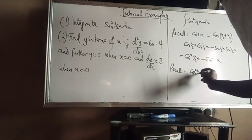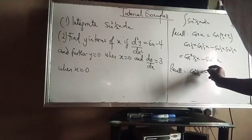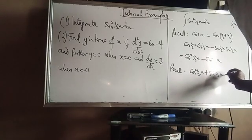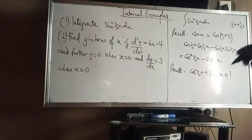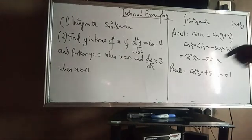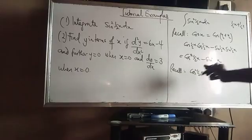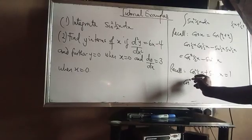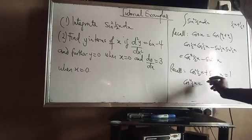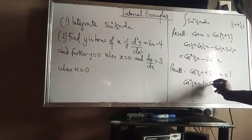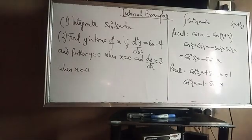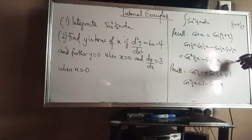Recall that cos²(x/2) + sin²(x/2) = 1. From this, making cos²(x/2) the subject gives cos²(x/2) = 1 − sin²(x/2). Let's call this equation 2.